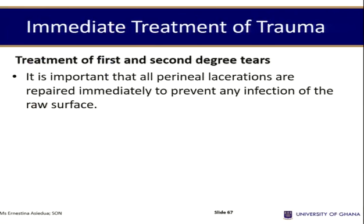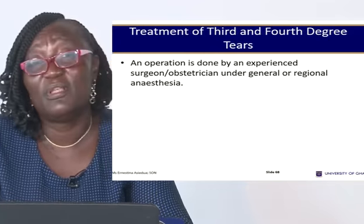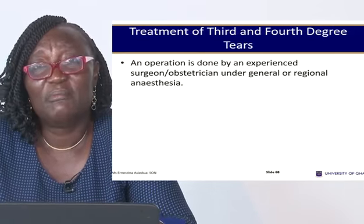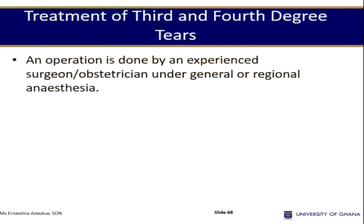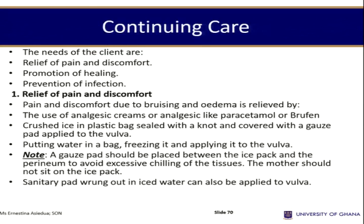It is important that all perineal lacerations are repaired immediately, regardless of degree, because raw surfaces increase the tendency to develop puerperal infections or sepsis. Repair is done by an experienced surgeon/obstetrician under general anesthesia. Sutures are placed in various layers using catgut or other absorbable sutures. First-degree tears are usually sutured under local anesthesia, while second-degree tears are sutured by the doctor under general anesthesia.